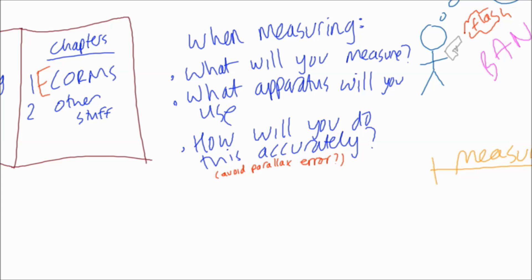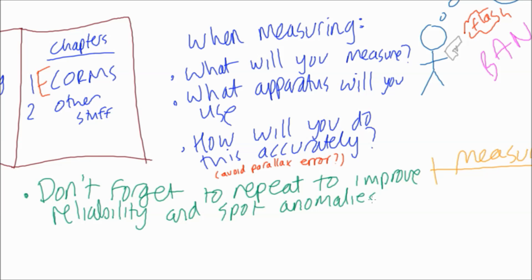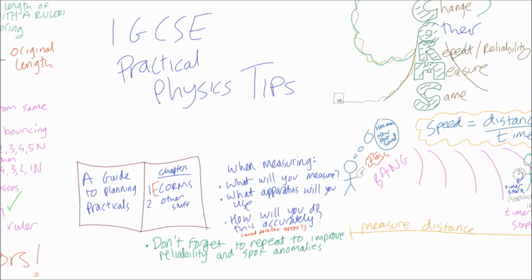You know one of the letters, R, is repeat. So are you going to do repeats? Often you are. It's going to improve your reliability and it's going to mean that anomalies are easier to spot. You won't always get a mark for talking about repeats because it doesn't improve your accuracy, but does improve your reliability. So there you go, something to think about in terms of planning a practical. More to come.